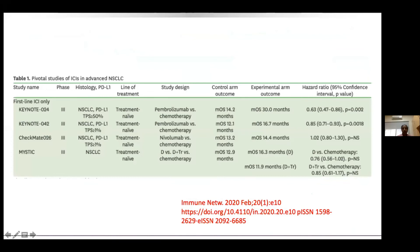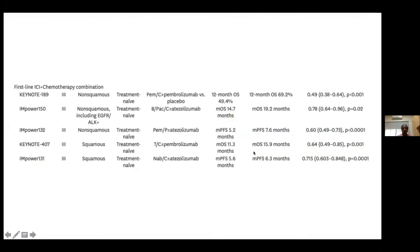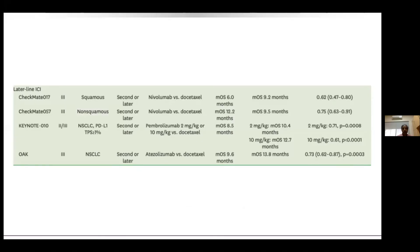A review article published in February 2020 in the journal Immune Network provides a comprehensive and up-to-date summary of all available data. It lists pivotal studies of immune checkpoint inhibitors in advanced non-small cell lung cancer in one place for easy comparison of outcomes. It also covers chemotherapy combinations and later-line treatments — important because as immuno-oncology drugs are now approved first-line, many patients will receive them early and we need to know what to offer at progression.